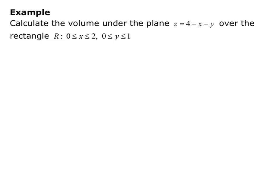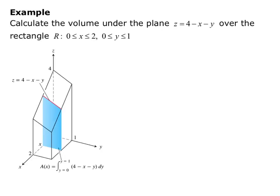Let's go through an example. We want to calculate the volume under the plane z equals 4 minus x minus y, over the rectangle R where x goes from 0 to 2 and y goes from 0 to 1. The textbook provides a picture: we have the plane z = 4 − x − y, and in the xy plane we have the rectangle with x from 0 to 2 and y from 0 to 1. We'll find the area of our y cross sections: A(x) equals the integral from y = 0 to y = 1 of (4 − x − y) dy.